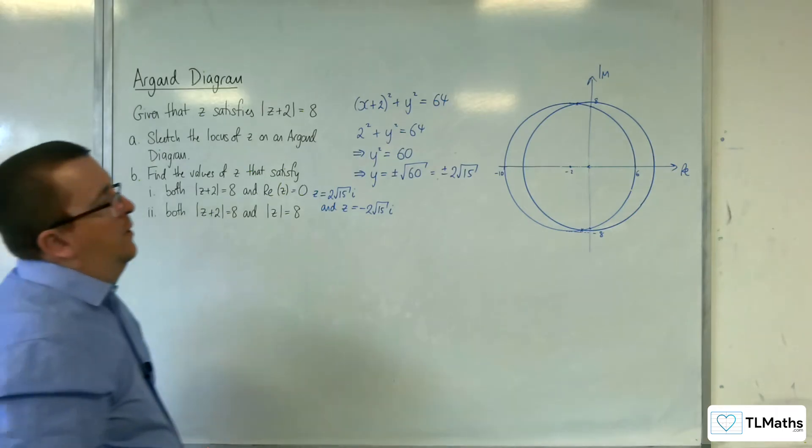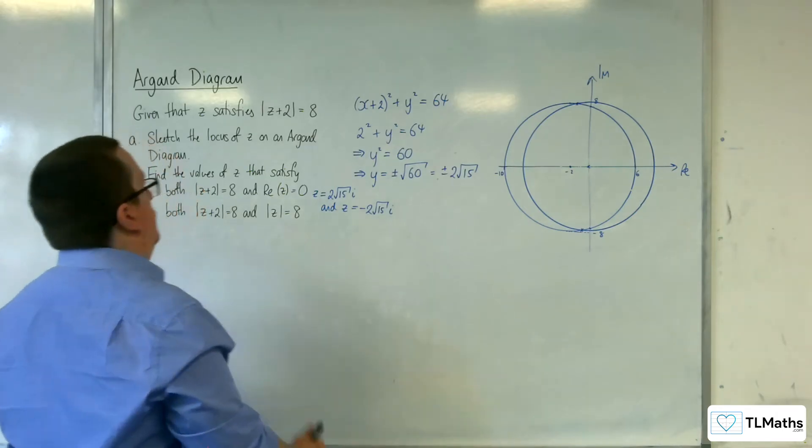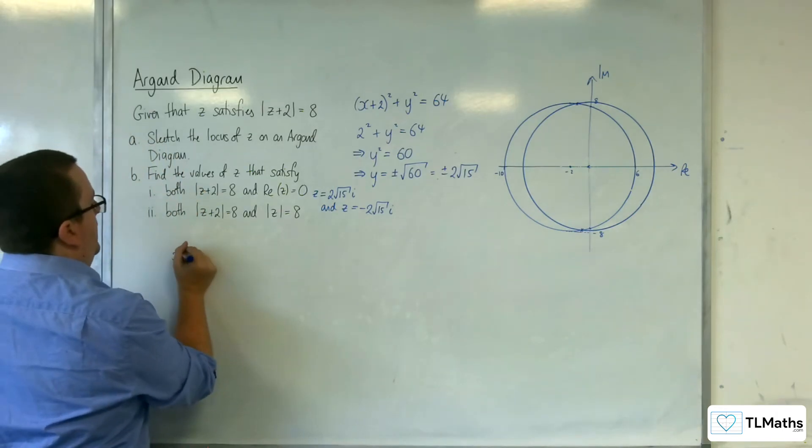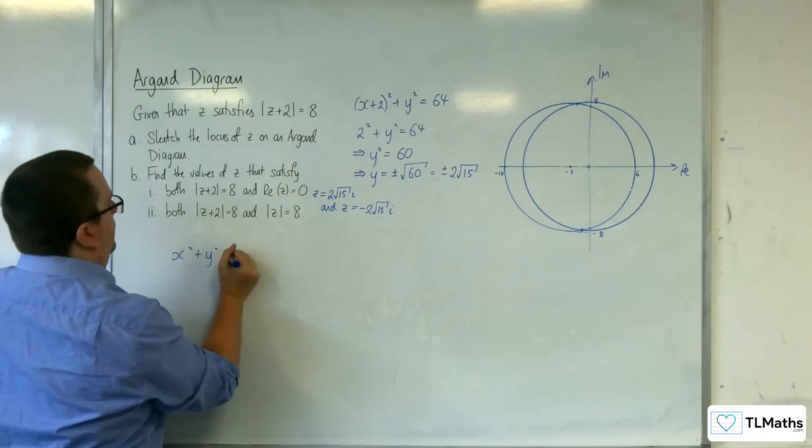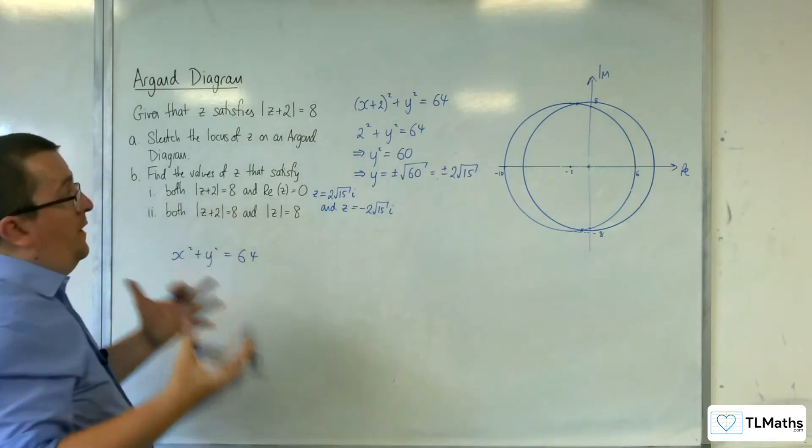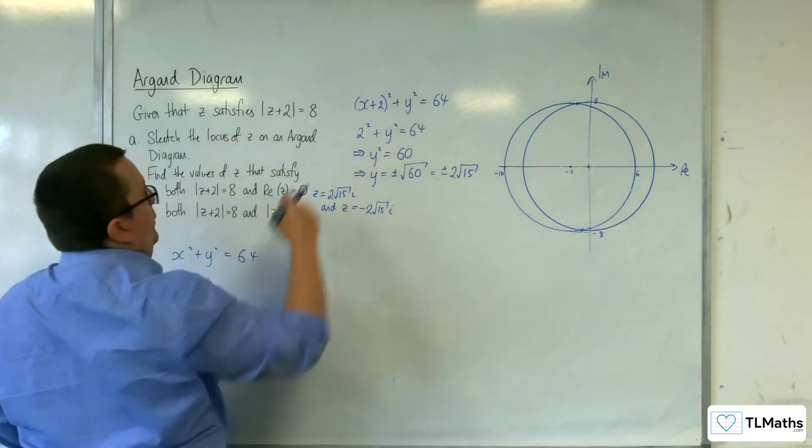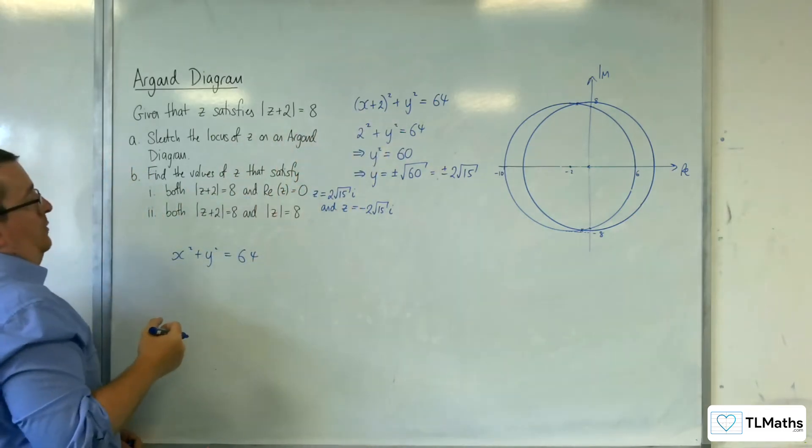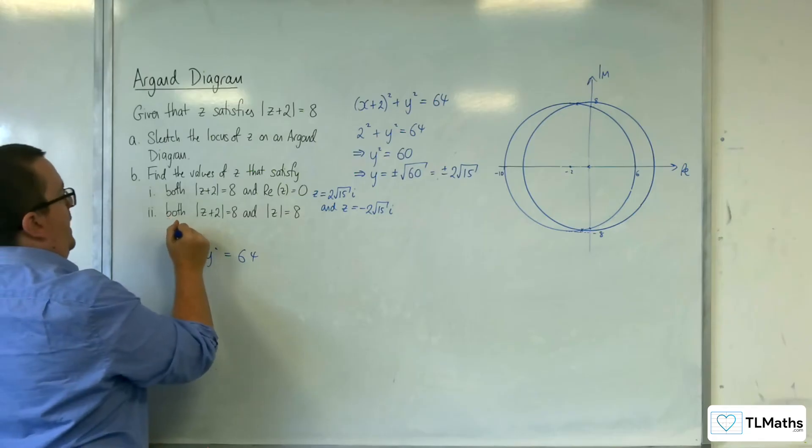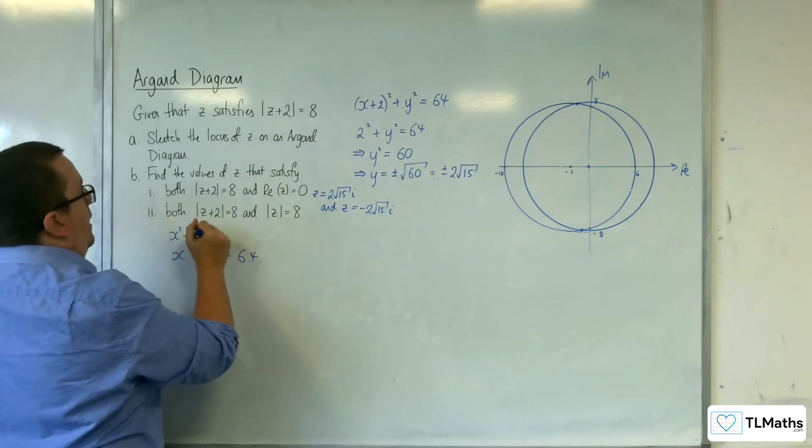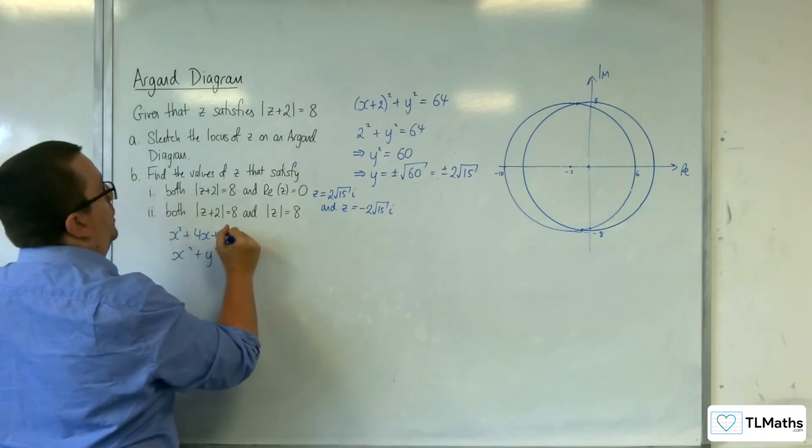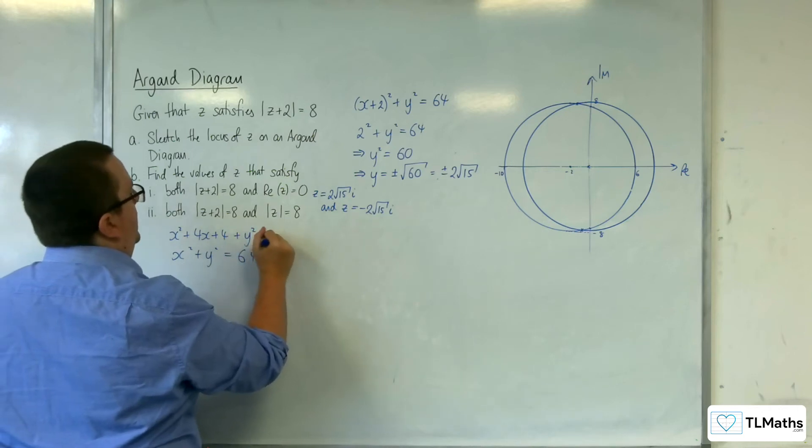OK. So, this second circle that I've drawn will have the equation x squared plus y squared equals 64. The first equation was x plus 2 squared plus y squared equals 64. So, if you expand that out, you get x squared plus 4x plus 4 plus y squared equals 64.